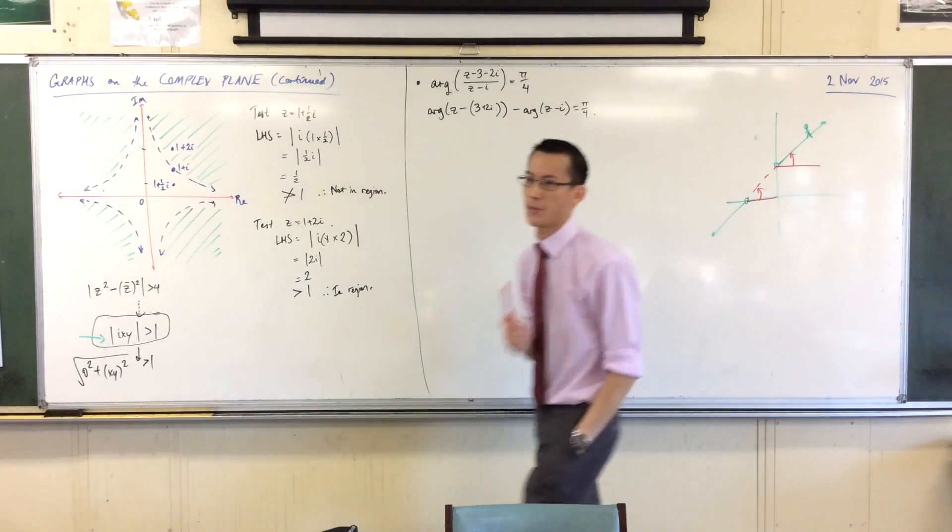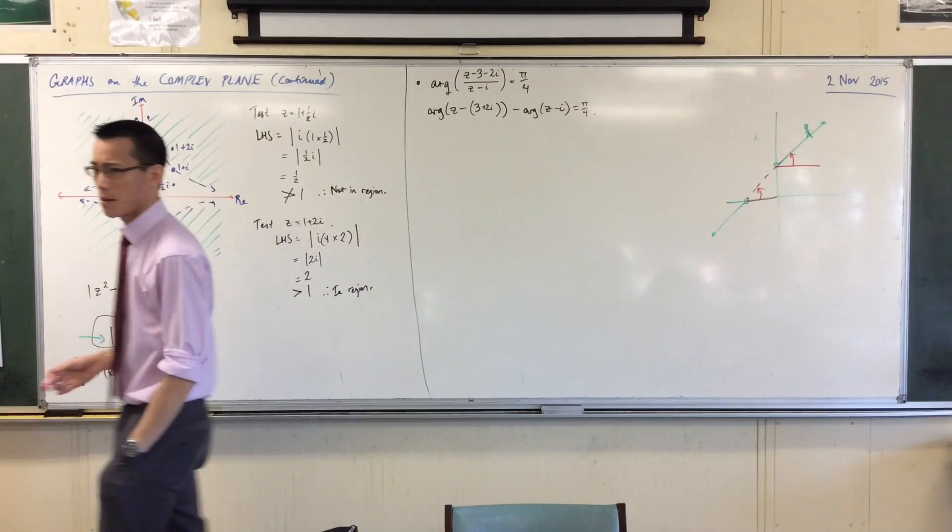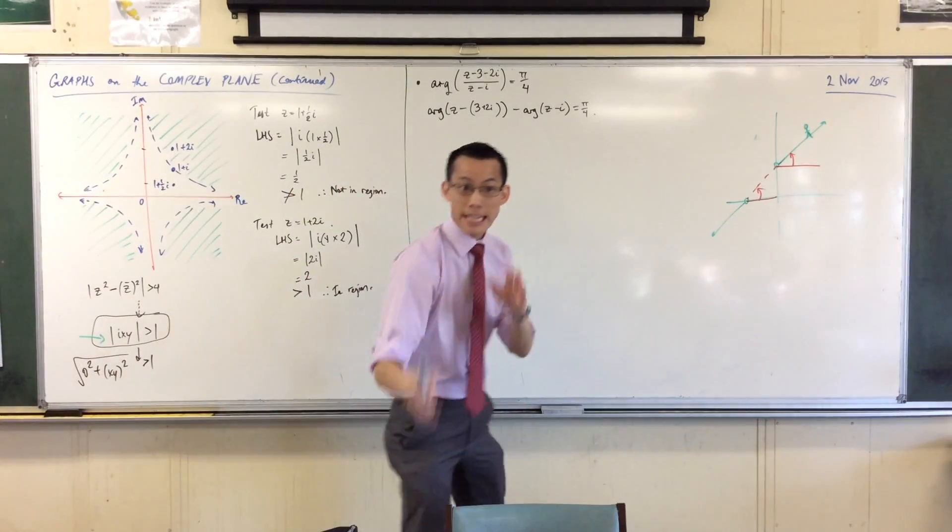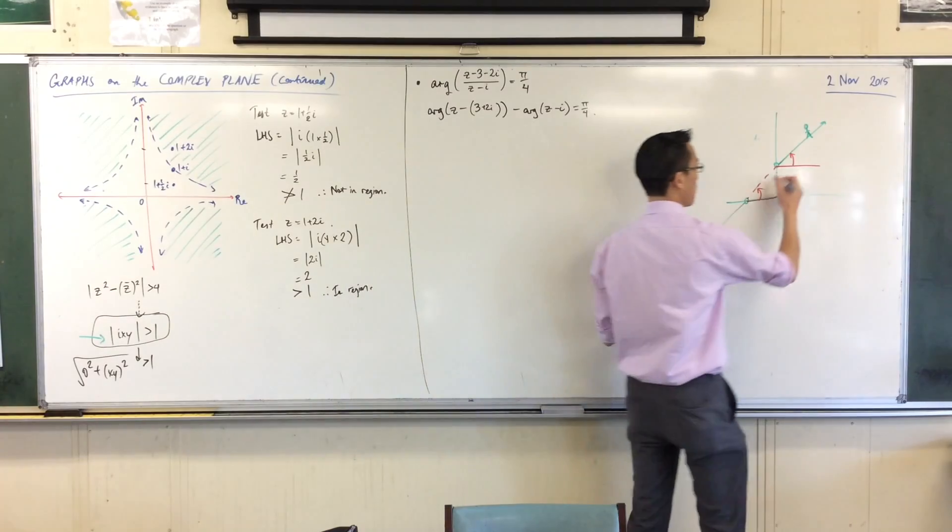What about if I said pi? What if I wanted the difference between the arguments to be pi? It's that same one, but inside. Yeah, it's going to be the interval between the two points, between the bags. Do you remember why?